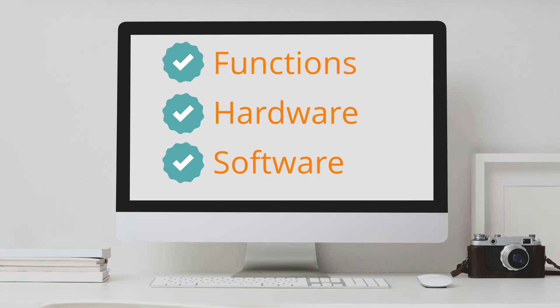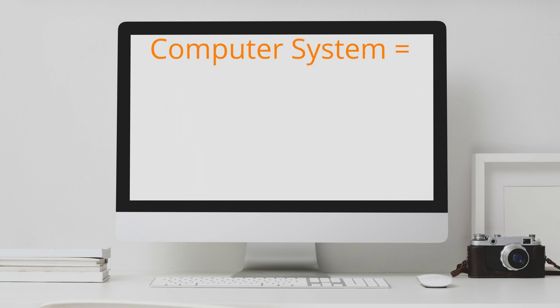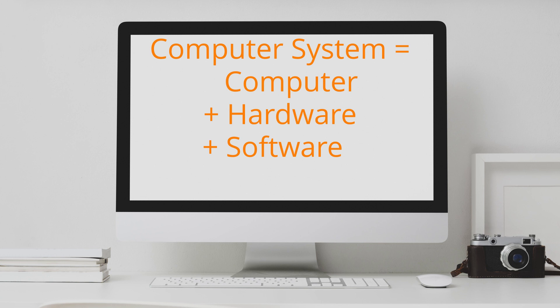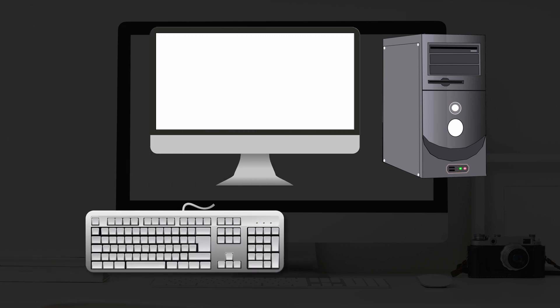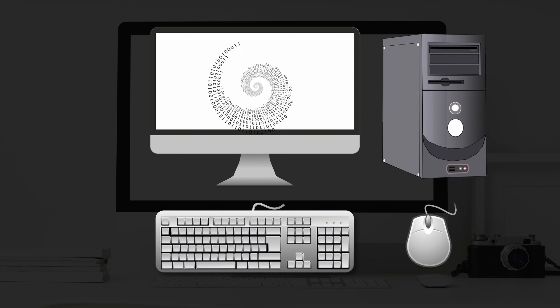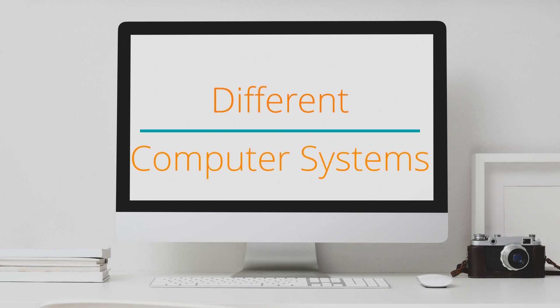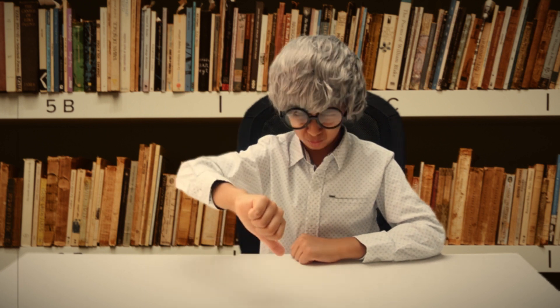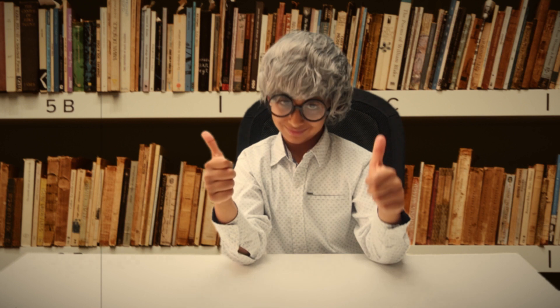Now that we know what software and hardware are, let's read what a computer system is one more time. A computer system is a computer combined with other hardware and software needed to perform desired functions. So we understood that a computer needs hardware and software to work, and all together they are a computer system. In the next video we will learn about different computer systems. Click here to subscribe to our channel for future videos, press the like button if you liked this video, and keep learning new skills. Thanks for watching, bye!